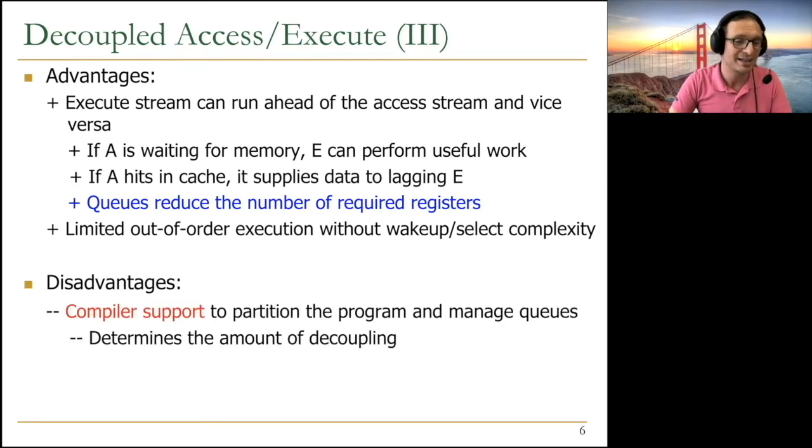Of course, everything comes with disadvantages. Again, compiler is important here. Compiler was important for VLIW, compiler is important for Tomasulo's algorithm, compiler is important for decoupled access and execute. You need to have compiler support to partition the program and manage the queues. This determines the amount of decoupling you can get. And people have developed interesting compilation techniques for this also, not as much as VLIW has done and not as much as work that's going on in systolic arrays today, but still, compiler is important.